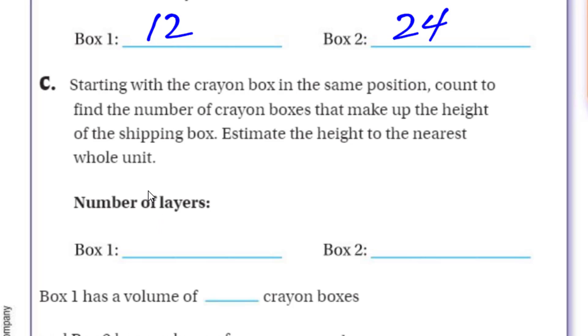I know my numbers are totally estimated, but it's more the activity that you are estimating. There's just no way I can really do this with you guys in the video. So hopefully you're doing this in class. It says starting with a crayon box in the same position, count to find the number of crayon boxes that make up the height of the shipping box. Estimate the height to the nearest whole unit. Number of layers. Box one, I'm going to say five. Box two, I'm going to just increase that to 10.